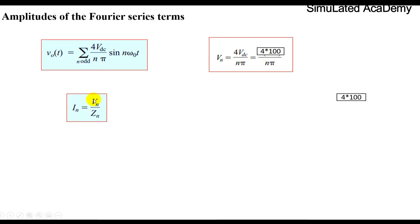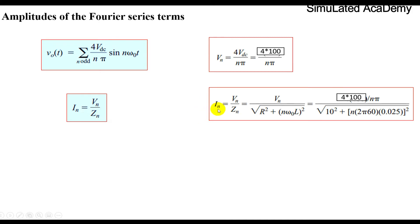The current is equal to Vn divided by Zn that is the impedance. In is equal to Vn divided by Zn where Zn is equal to R square plus n omega 0 L whole square and we will take the square root of this.